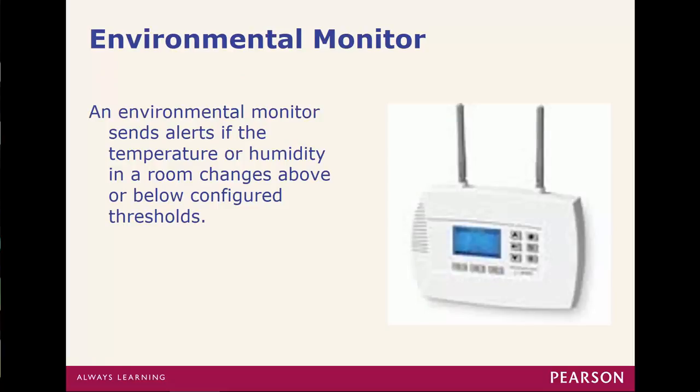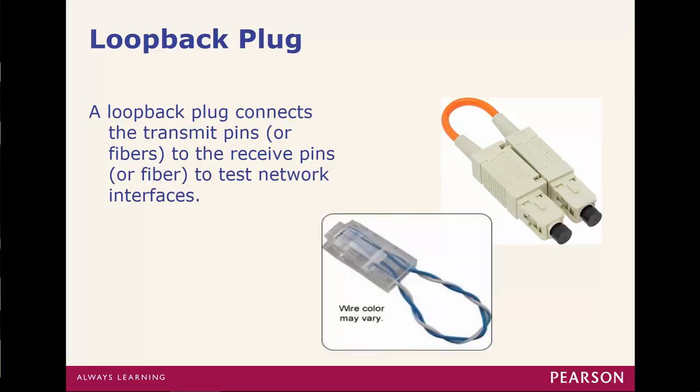An environmental monitor checks the temperature and humidity. Depending on the room's environment, conditions could change. It could also be a thermostat — if it detects the room is getting too hot it turns the AC on, if too cold it turns the heater on. But normally we go one step further and check the humidity of the room as well. A loopback plug essentially crosses the transmit and receive so we can test to see if that connection is working.